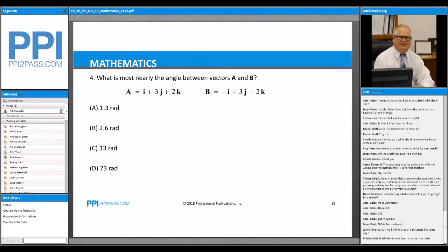Great. This is perfect. What is most nearly the angle between two vectors? Okay, everyone.